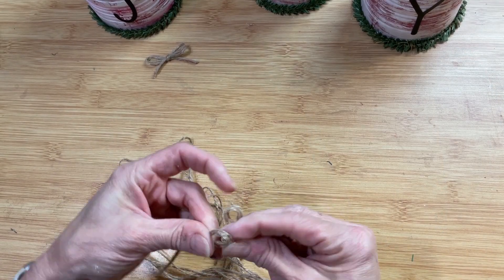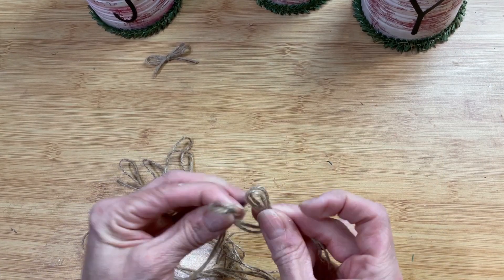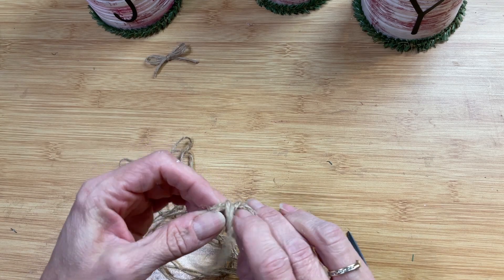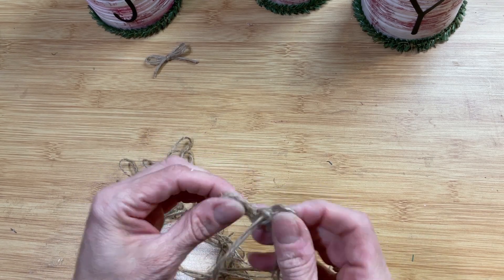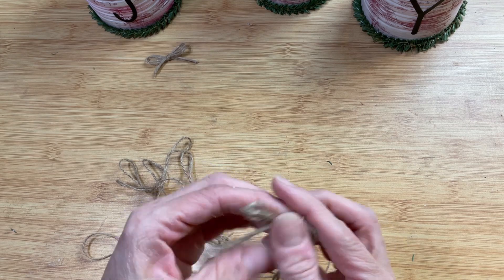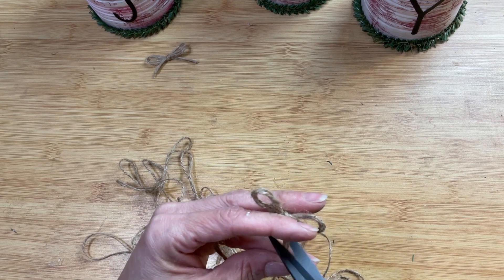Then taking a thinner jute twine, I'm going to double it, and then I'm going to make three small simple bows that we can glue to the top right at the center of that jute twine going around the top of the can.